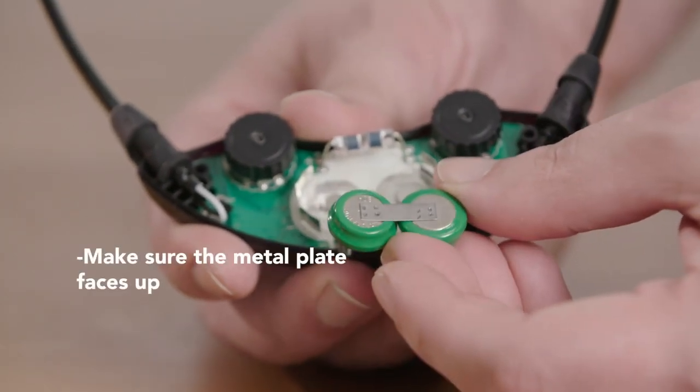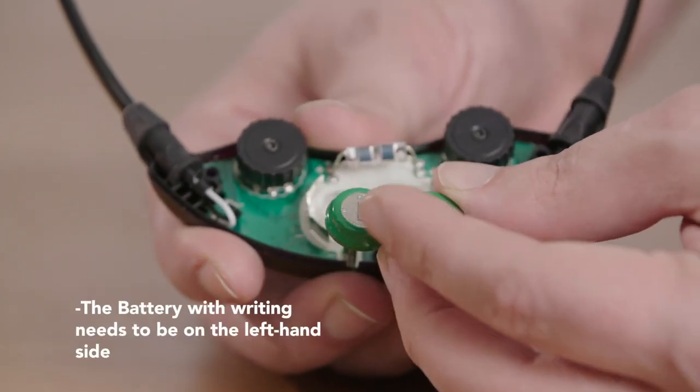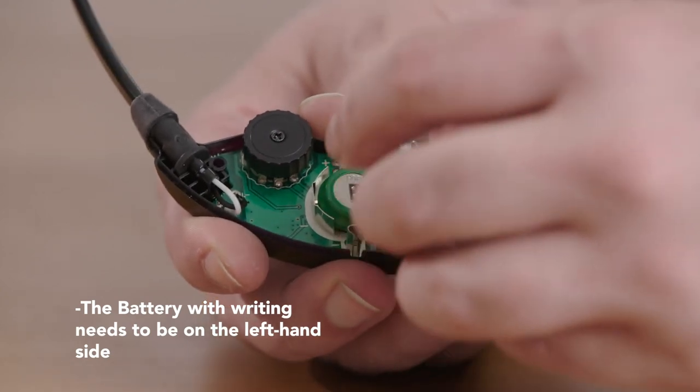The metal plate needs to be facing up towards us and the battery that has writing and a ring around it needs to be on the left hand side when we put it in.